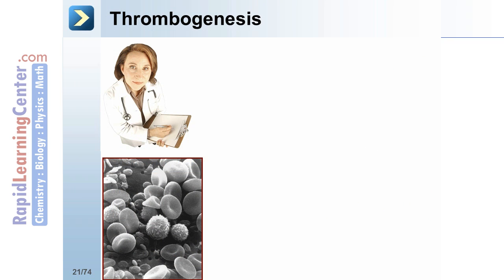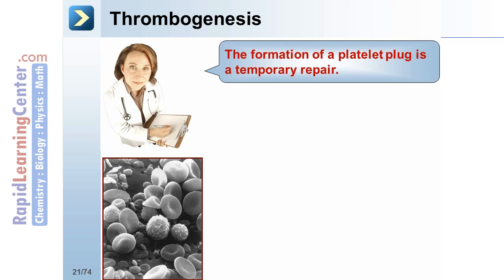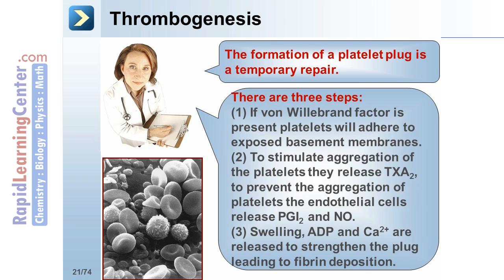The formation of a platelet plug is a temporary repair. There are three steps. First, if von Willebrand factor is present, platelets will adhere to exposed basement membranes. Second, to stimulate aggregation of the platelets, they release thromboxane A2; to prevent the aggregation of platelets, the endothelial cells release PGI2 and nitric oxide. Third, there is swelling, and ADP and calcium are released to strengthen the plug, leading to fibrin deposition.